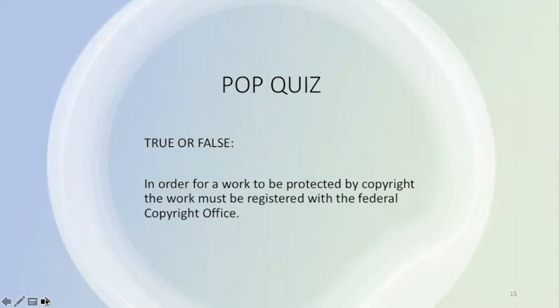It's time for another pop quiz. True or false: in order for a work to be protected by copyright, the work must be registered with the Federal Copyright Office. If you said false, you're correct. Registration with the U.S. Copyright Office is not required in order to have copyright protection. However, as you will see in the next slide, there are several reasons why you should consider registering your copyright with the U.S. Copyright Office.